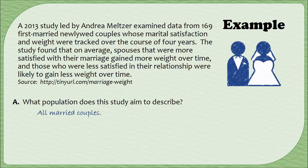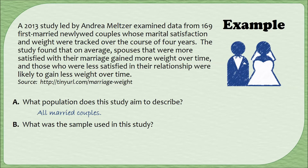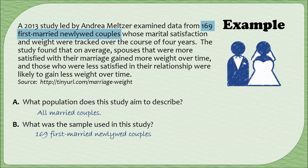This study is trying to describe married couples. However, that's not exactly who they studied — they didn't go to every single married couple and say 'how much weight have you gained in the last four years?' So instead, let's look at the specific group that they studied: 169 first-married newlywed couples. This is a very specific subgroup of that population — they were newlyweds and they were first married, meaning they had never been married before. So this specific group of people is our sample. When I ask what was the sample used, I'm going to look for that very specific phrase: 169 first-married newlywed couples.